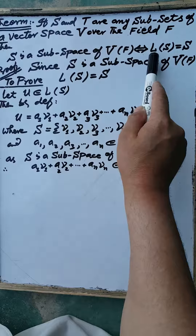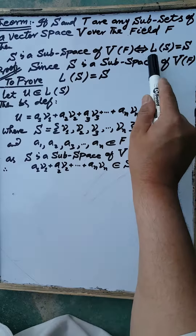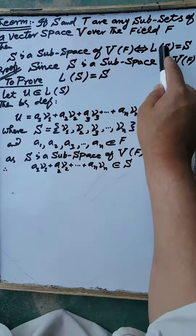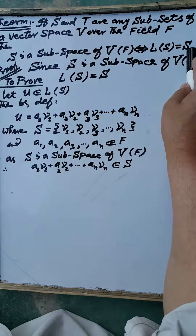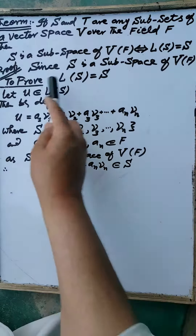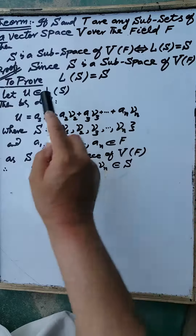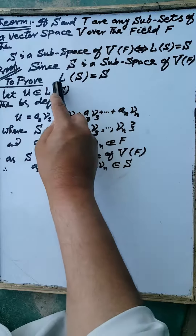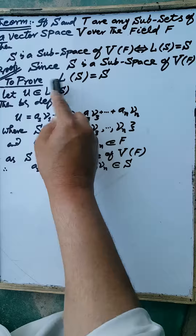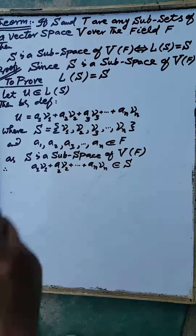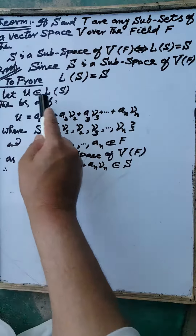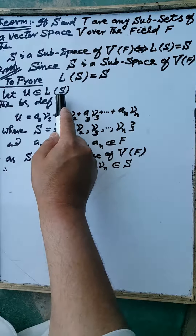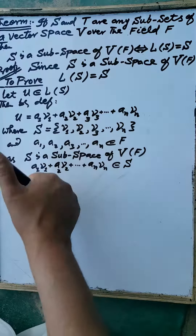Since S is a subspace of the vector space V over the field F, we have to prove that the set span by the set S is equal to the set S. Let U be any vector of the spanning set span by the set S. Then by definition,